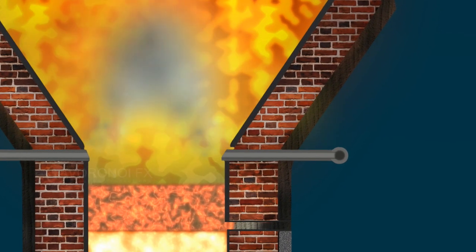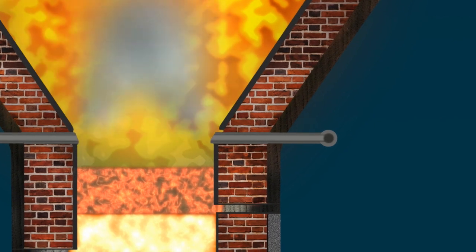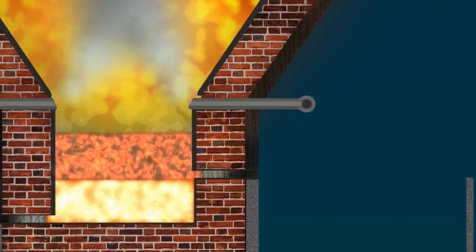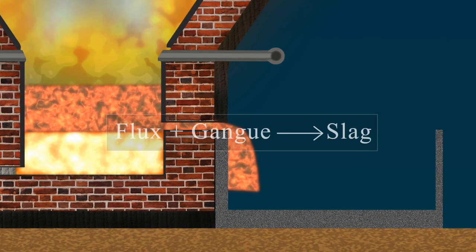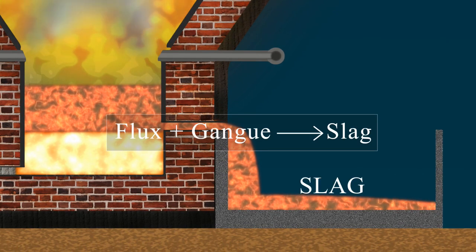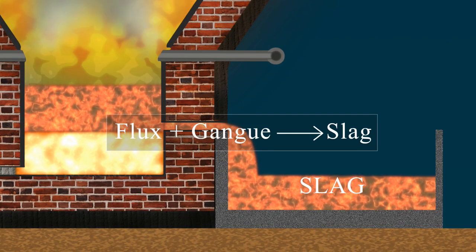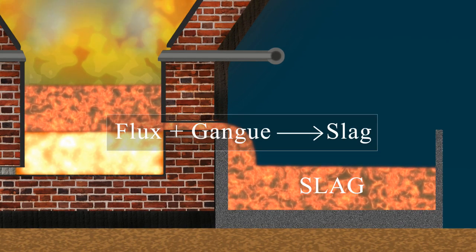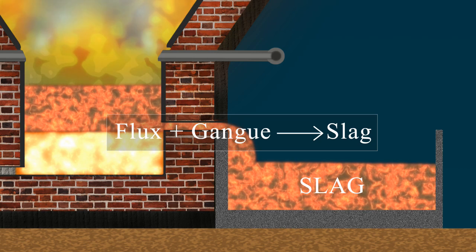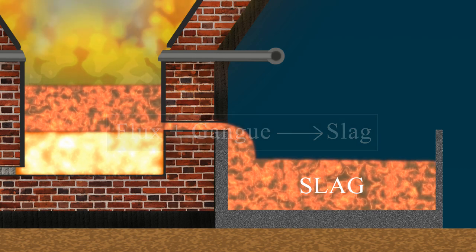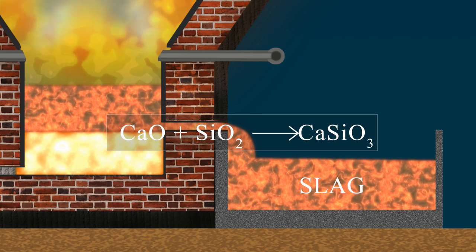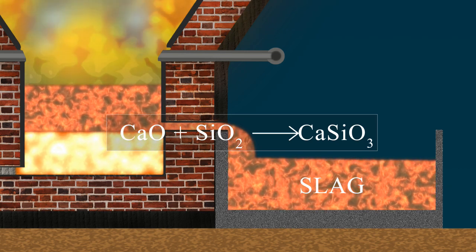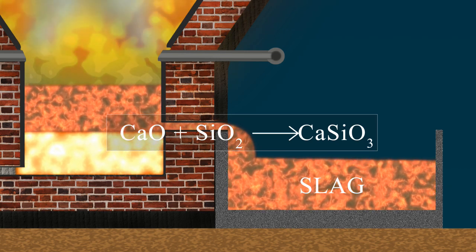Then, impurities of silicon dioxide in the ore react with calcium oxide and form calcium silicate, which is known as slag. CaO on reaction with SiO2 forms CaSiO3.